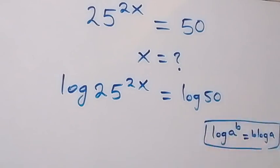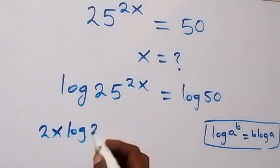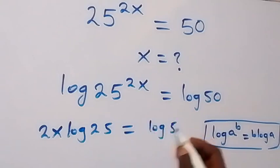So when we apply this to this place here, we have 2x log 25 equals log 50 on this side.